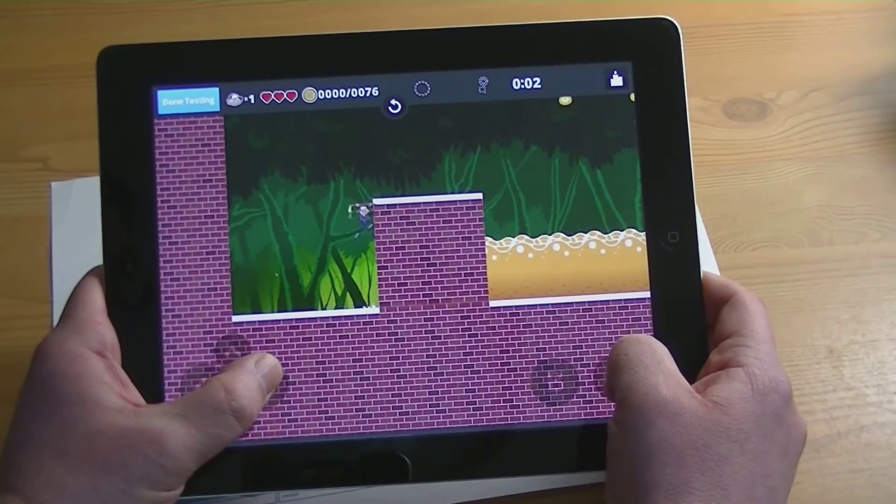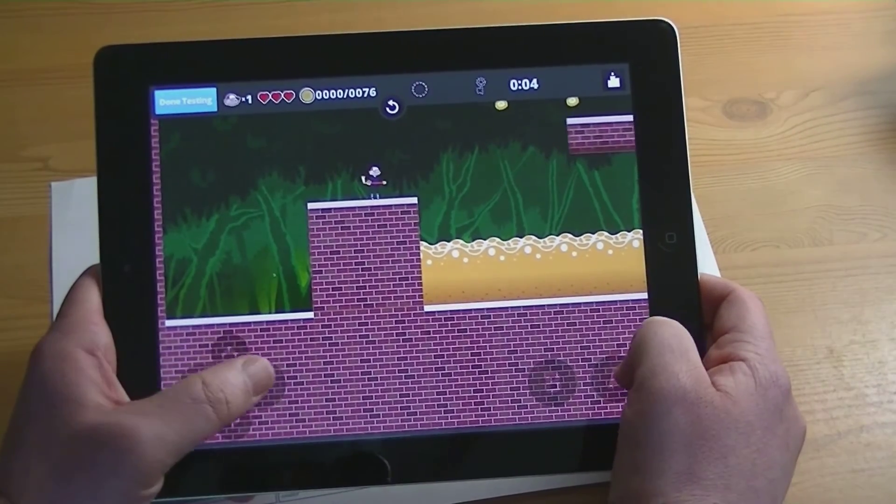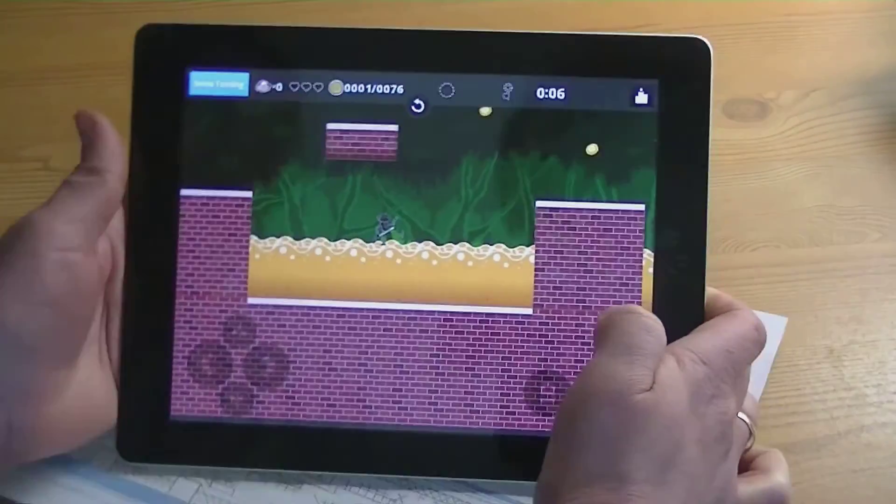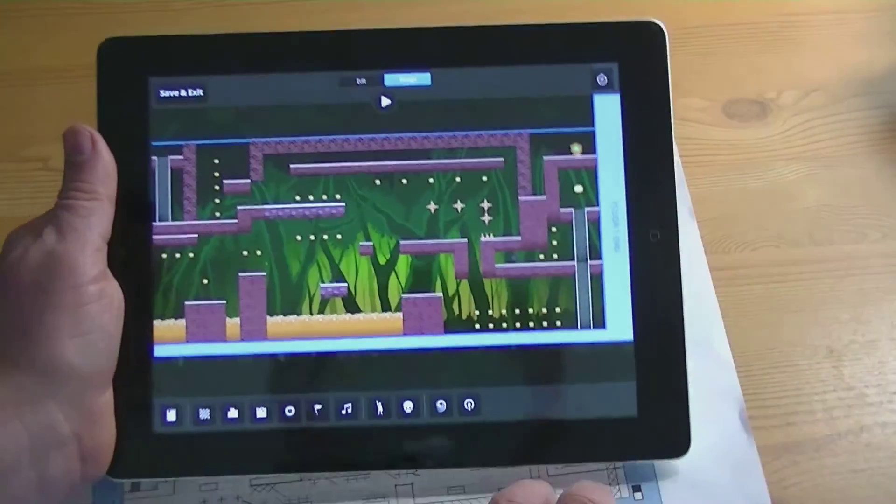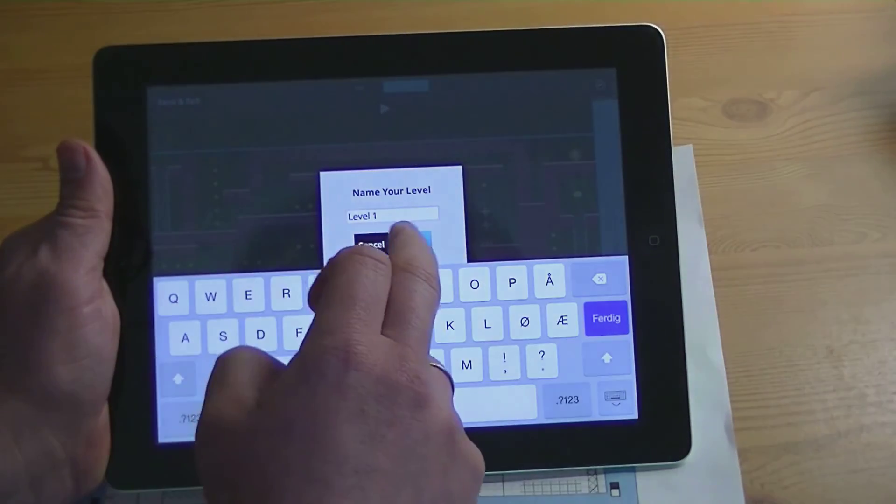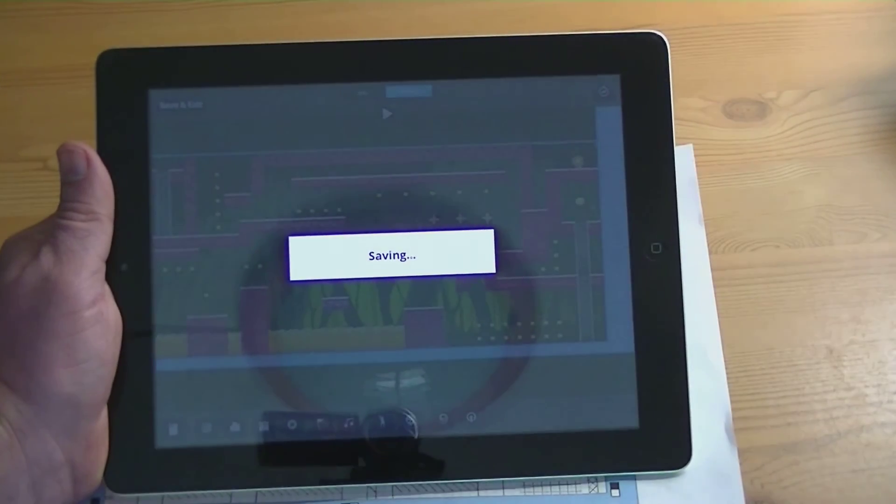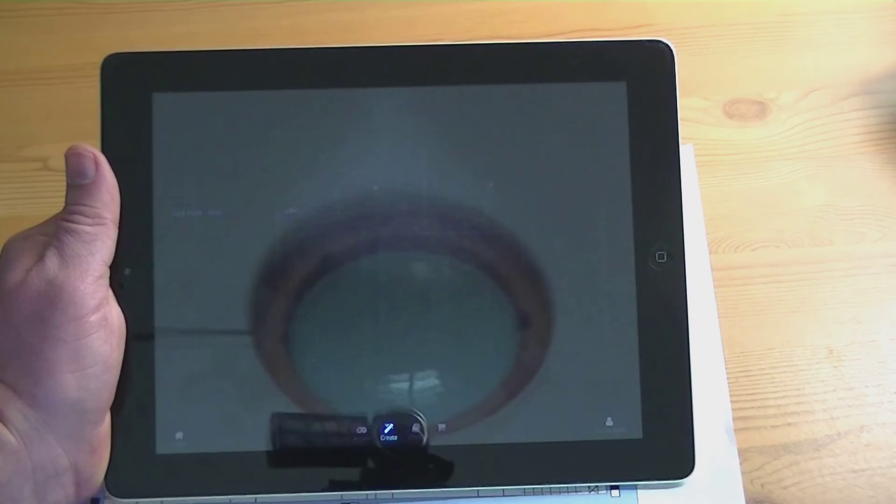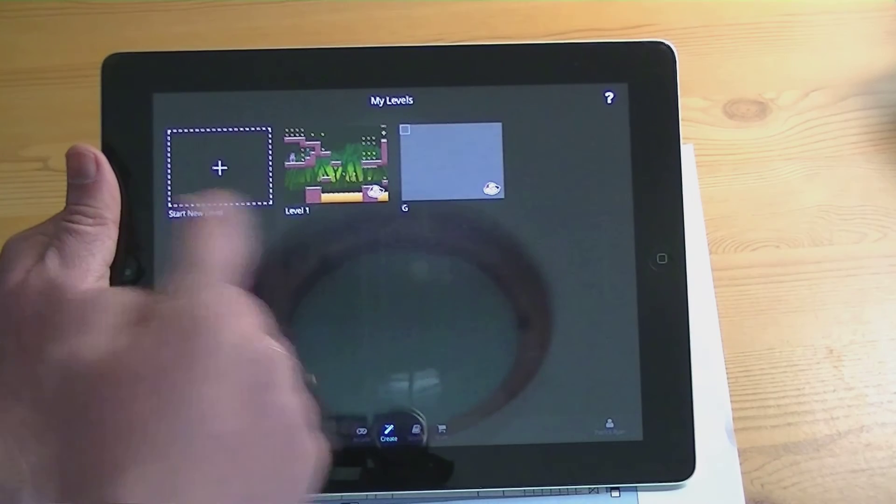I would have to go through, I don't think I want you to see me playing this forever trying to beat my own level. But that's Pixel Press. So done testing, once you're done you can save it, and get out of here, and rename it if you want and all that good stuff.